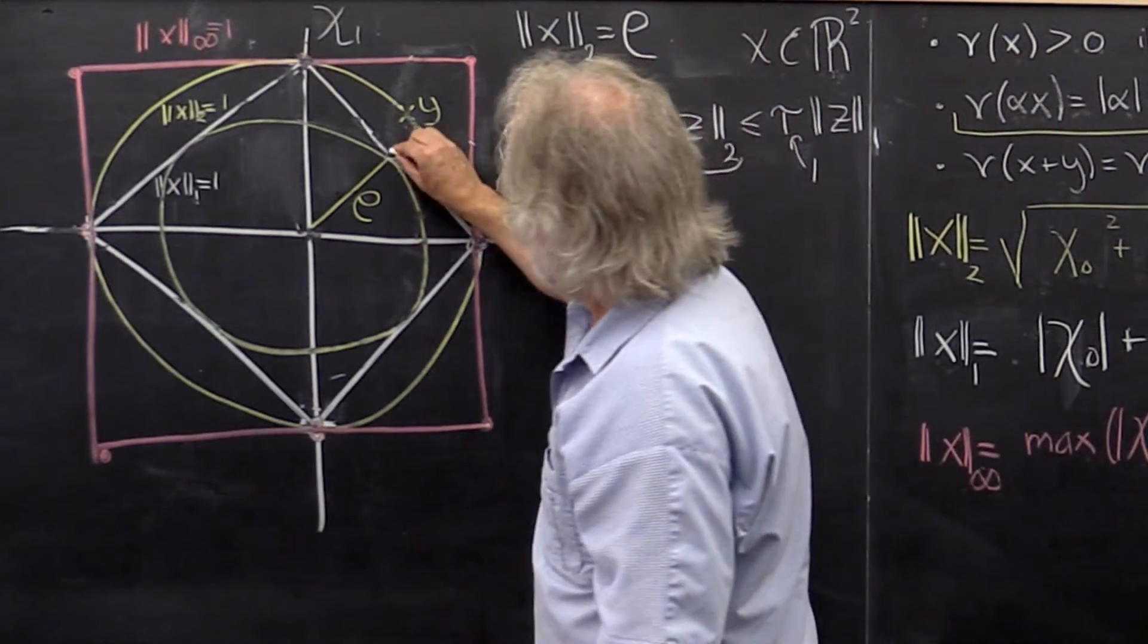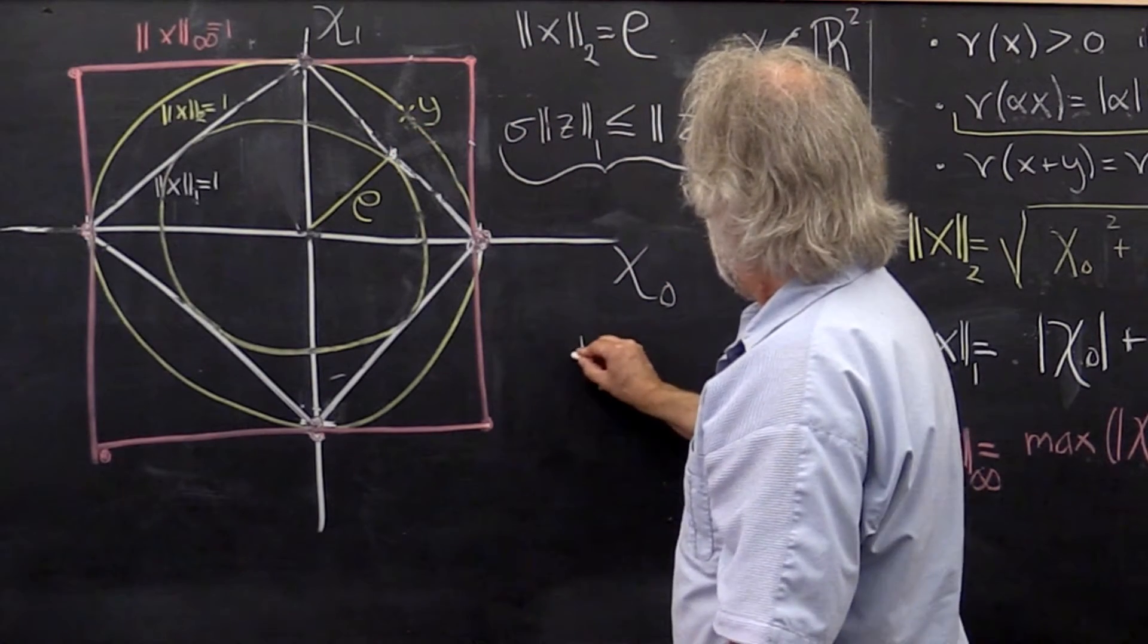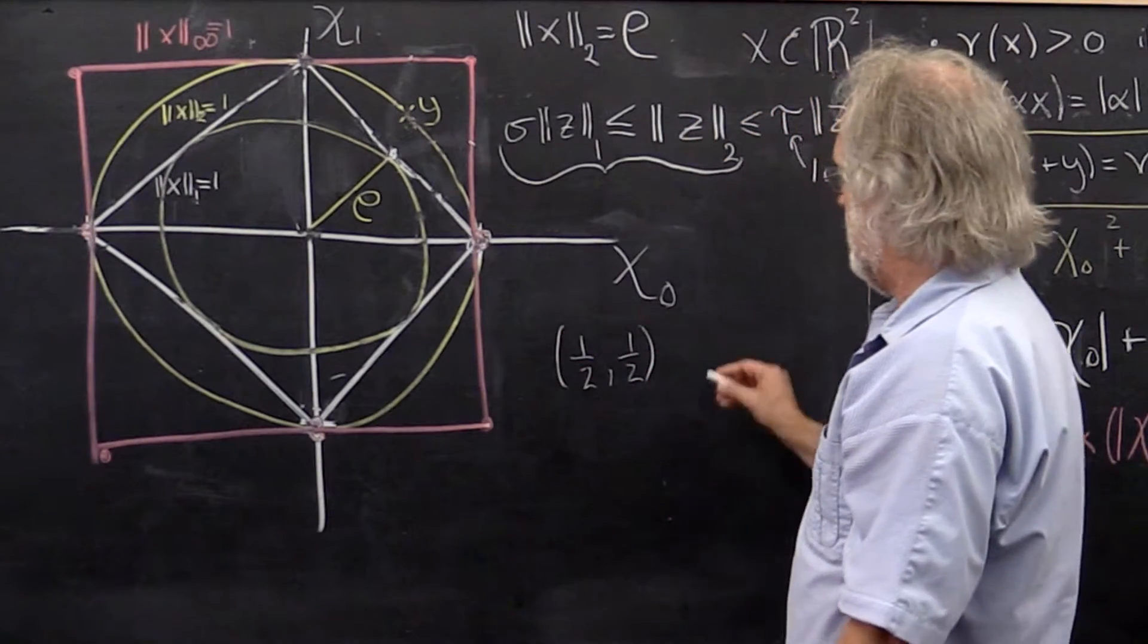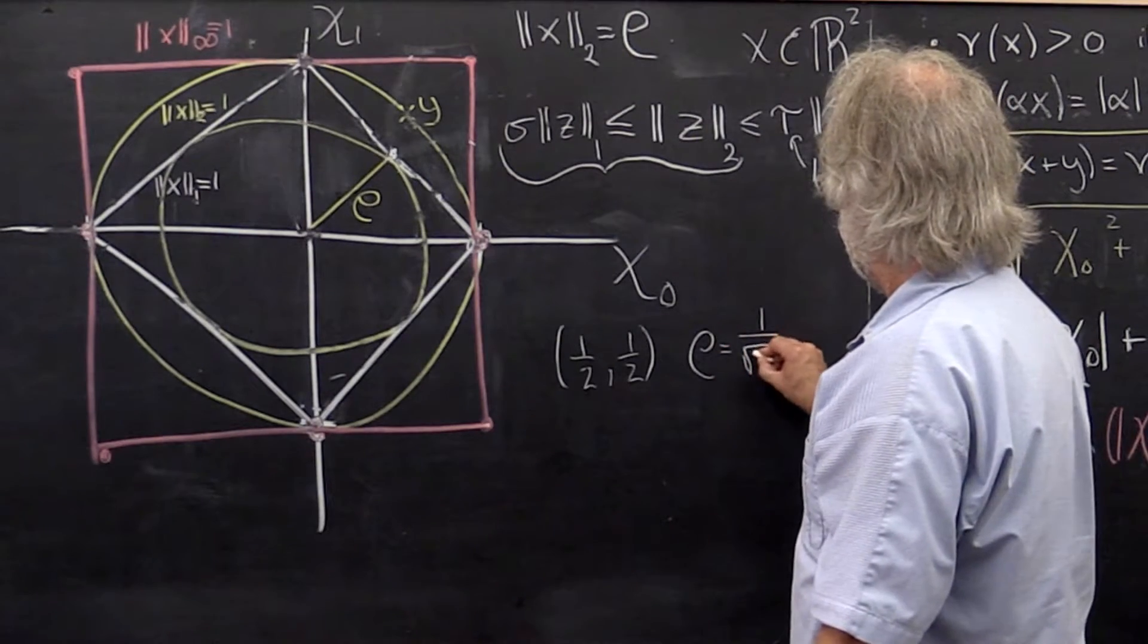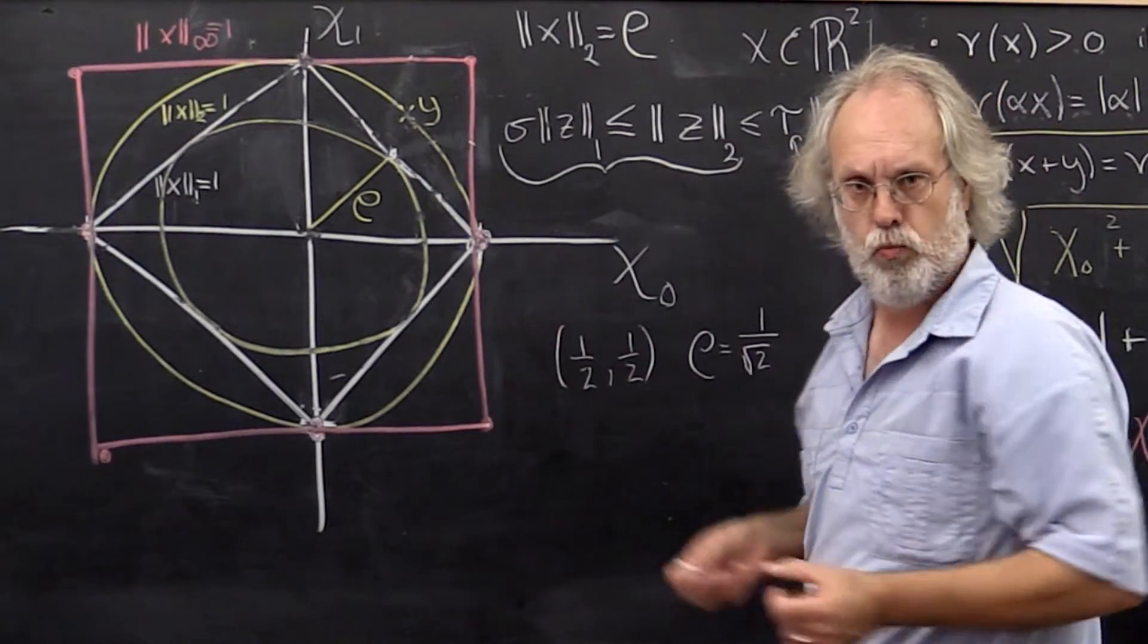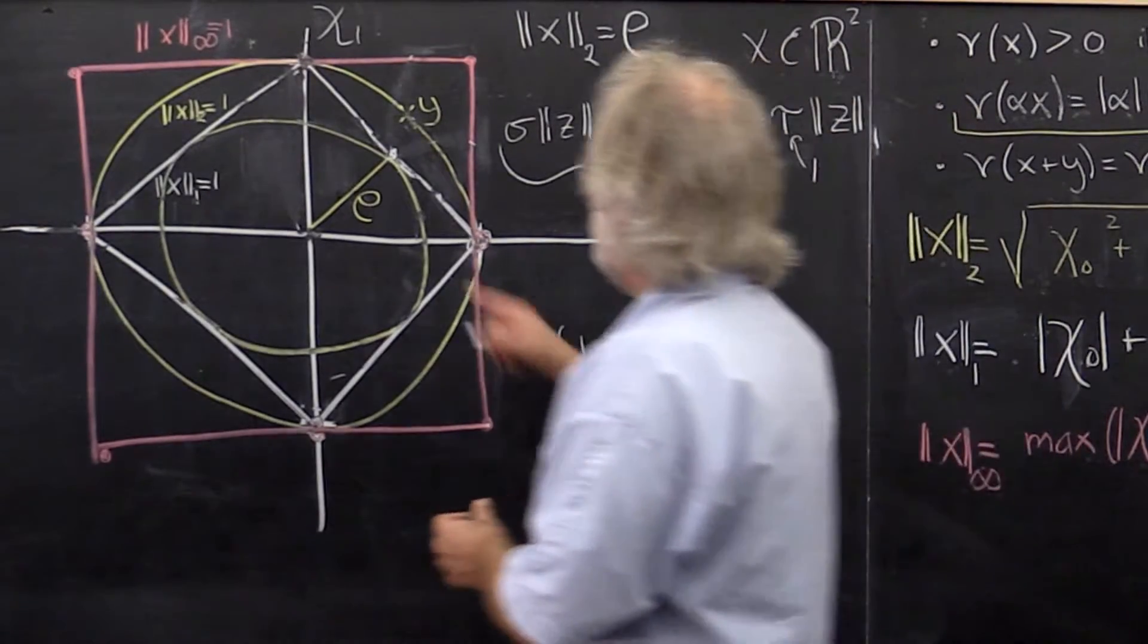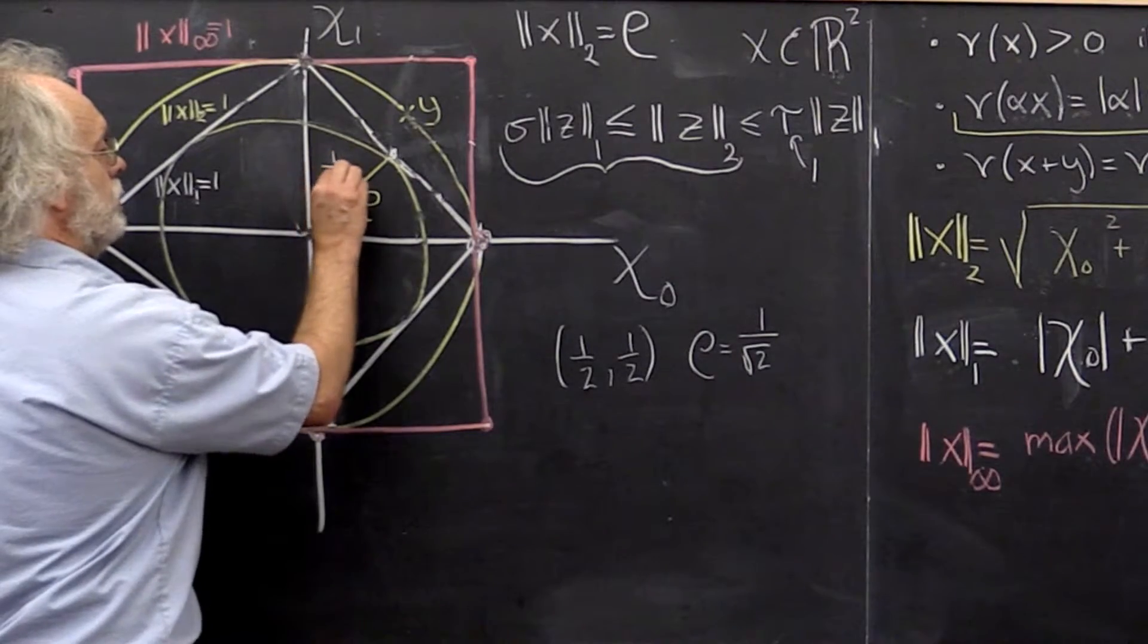Well, it's not hard to see that that's the point (1/2, 1/2). And it's not hard to see then that rho is equal to 1 divided by the square root of 2. That's a matter of applying the Pythagorean theorem or looking at length or whatever method you want to use. So we know that this radius right here is 1 divided by the square root of 2.